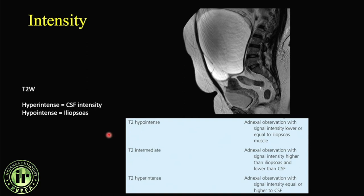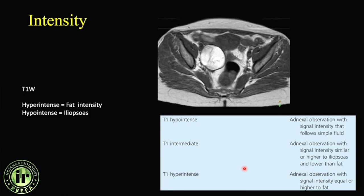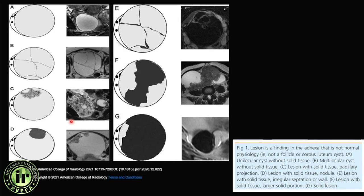For T2 signal intensity, hyperintensity is defined relative to CSF, and hypointensity relative to the iliopsoas muscle. Observations hypointense to muscle are T2 hypointense; those equivalent to or hyperintense to CSF are truly T2 hyperintense. For T1, the comparison is fat for hyperintensity and muscle for hypointensity. These definitions eliminate ambiguity in reporting. The graphic representations include unilocular lesions with thin walls, unilocular lesions with multiple septa, lesions with papillary projections, mural nodules, thick enhancing septations, and lesions with more than 80% solid component.